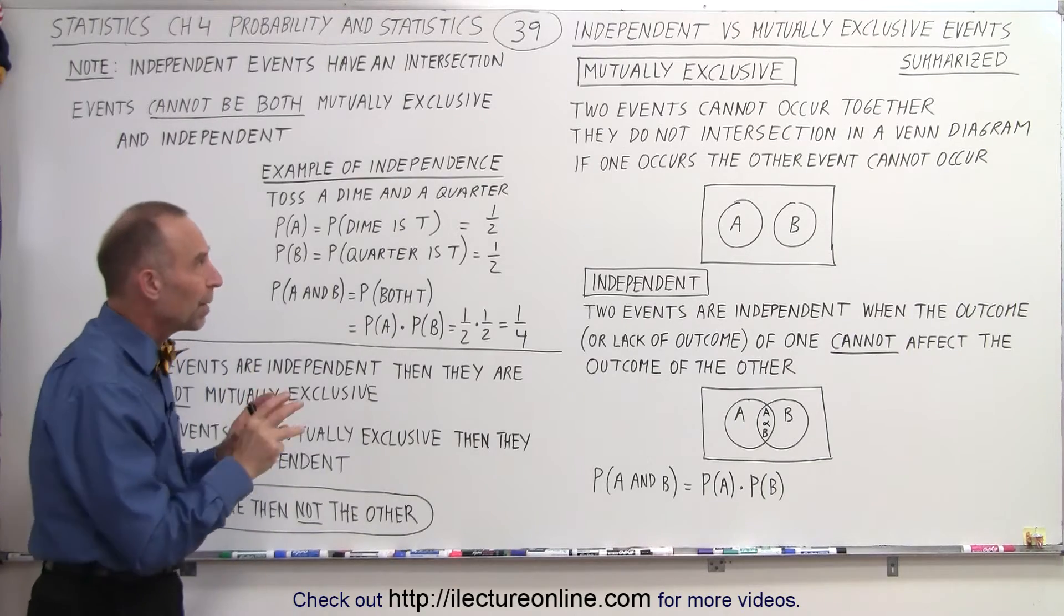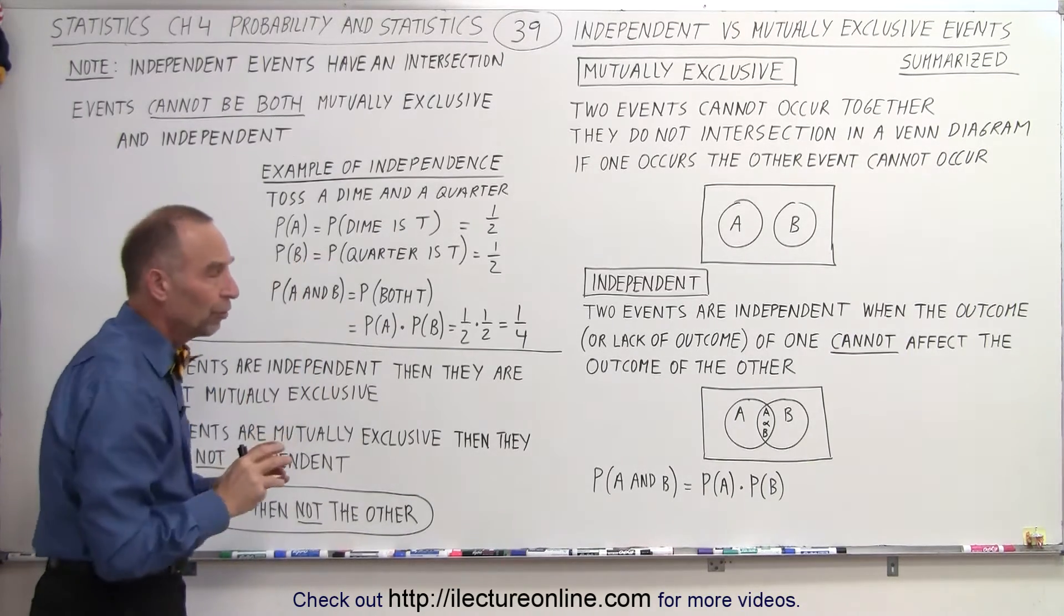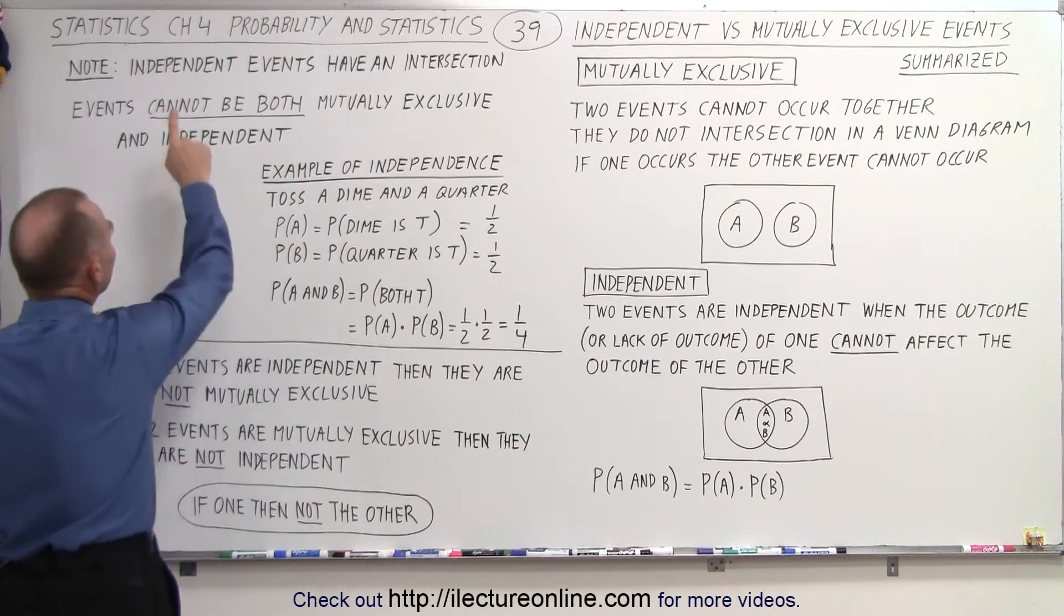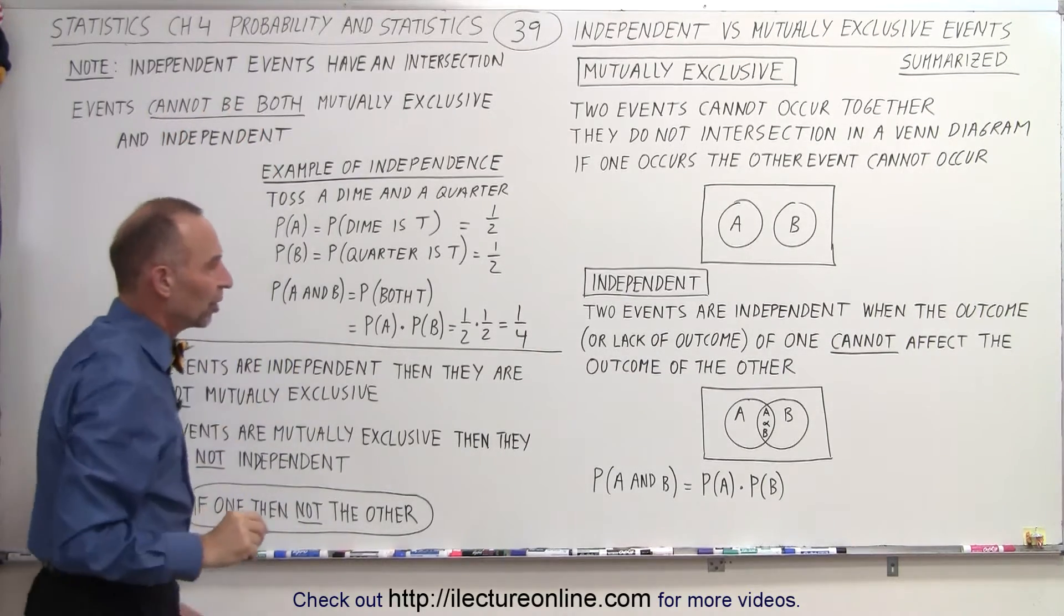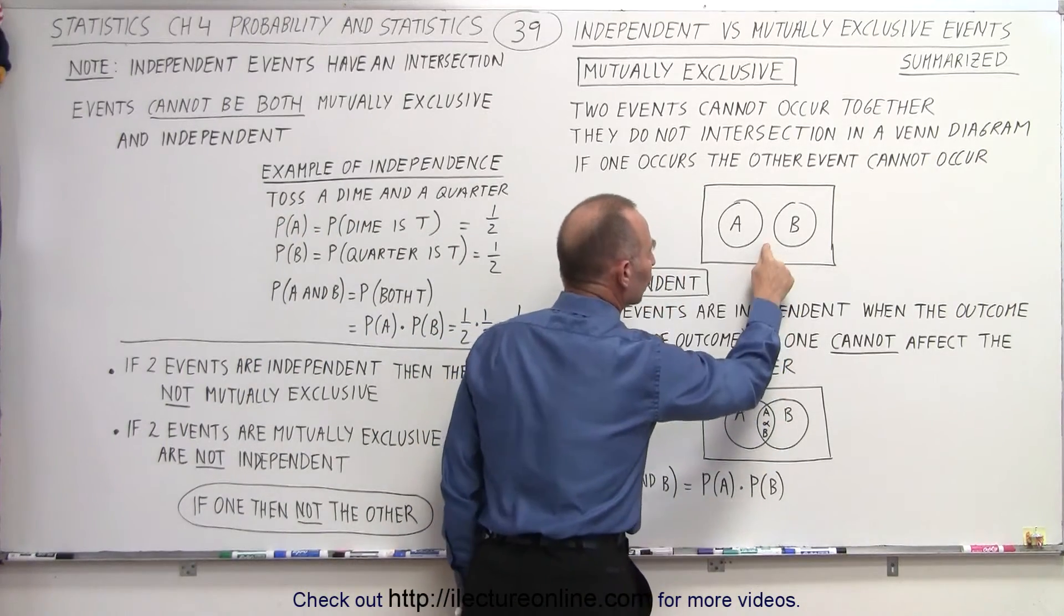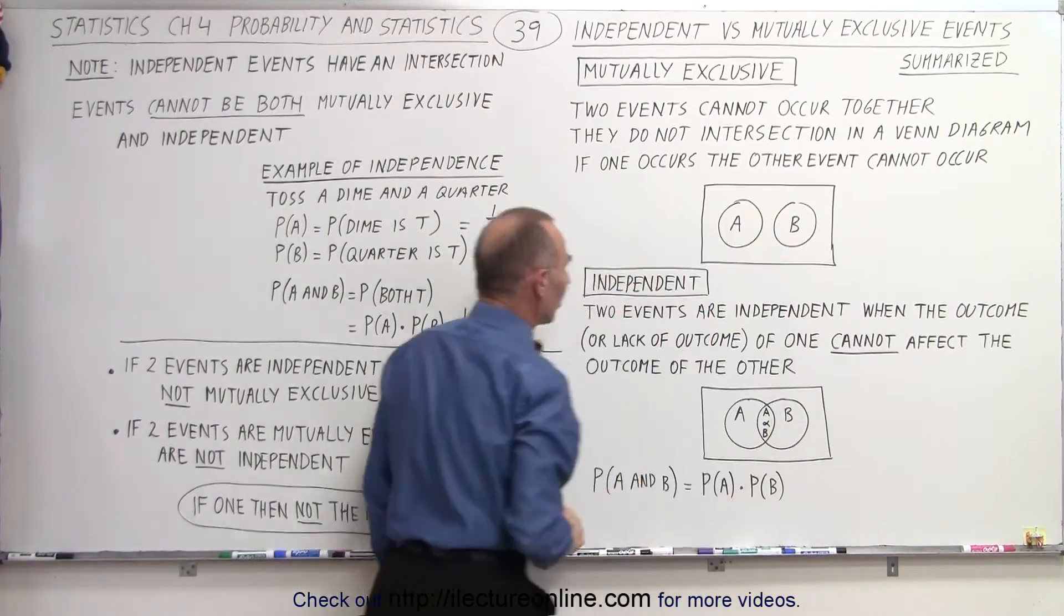Now some important things to remember about mutually exclusive and independent is noted as follows. Independent events have an intersection. Notice, if they're independent, they have an intersection. If they're mutually exclusive, there is no intersection.